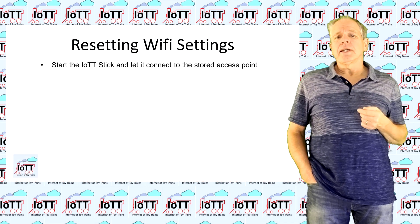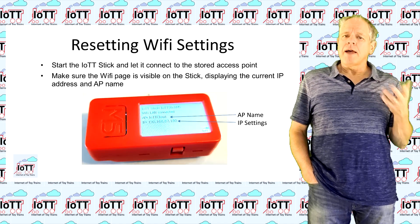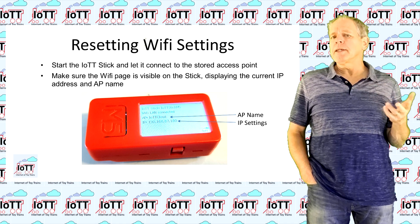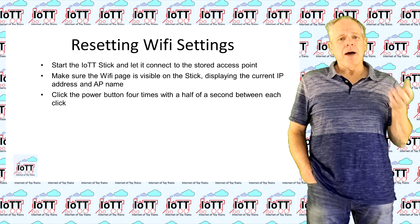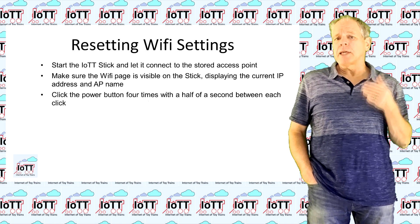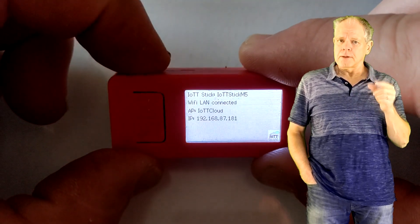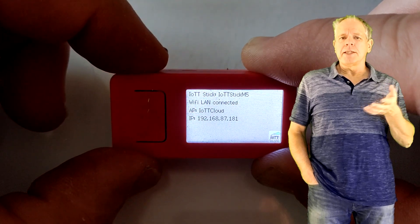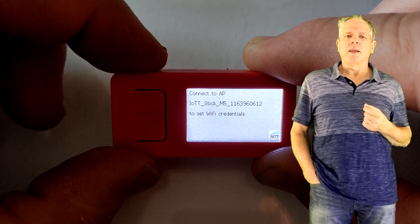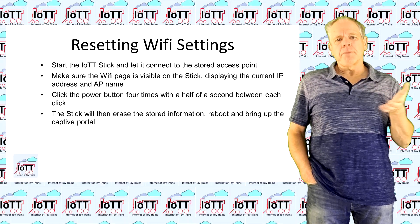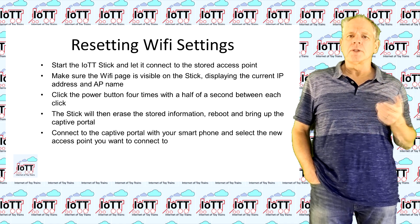Start the stick and let it connect to the stored access point. Make sure the Wi-Fi page is visible on the stick, displaying the current IP address and AP name. Then click the power button four times with about half a second between each click — like this. The stick will then erase the stored information, reboot, and bring up the captive portal. Connect to the captive portal with your smartphone and select the new access point you want to connect to.